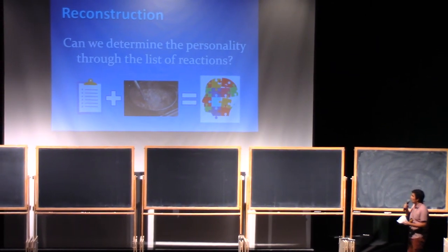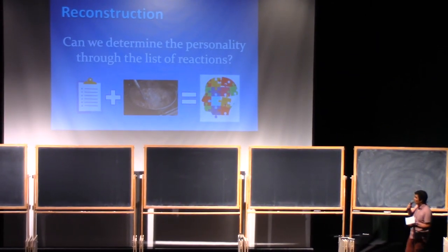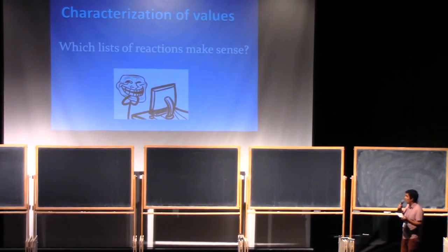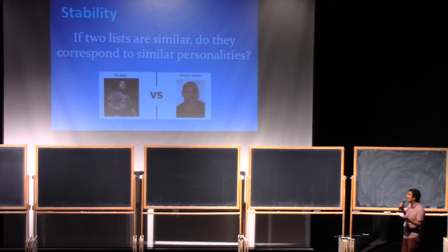Other kinds of questions we can ask: which lists make sense? Can we find out if a list was made by a troll or is it valid? Also, if we know that two lists are similar, for example they differ only on how people react to Shrek, then can we say something about their personalities? Do they correspond to similar personalities?